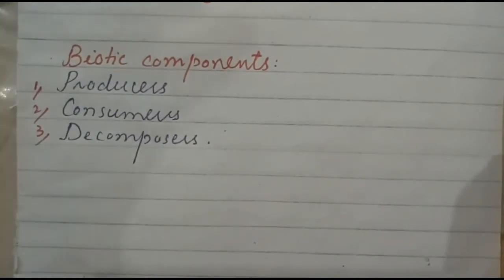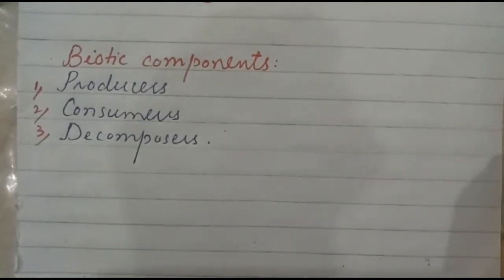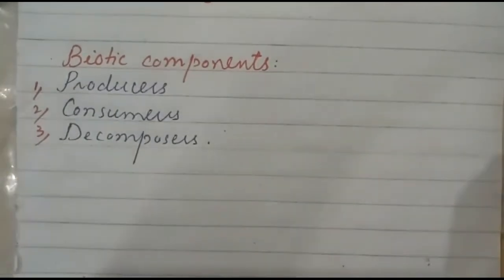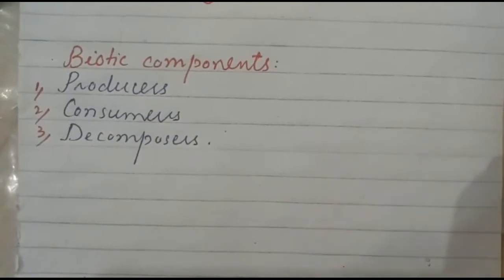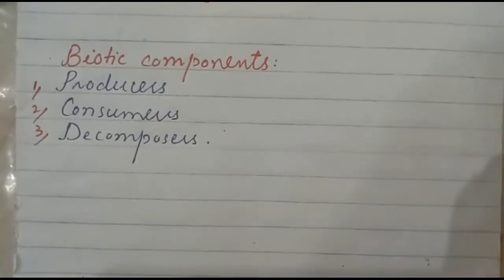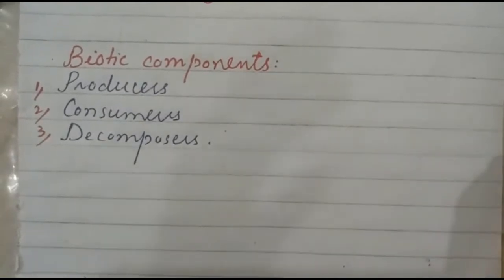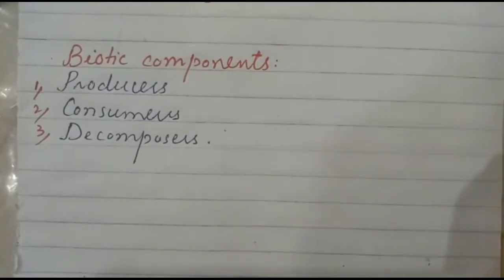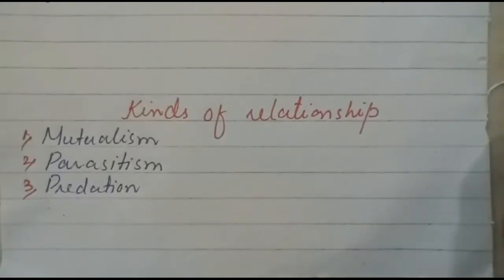During the decay and decomposition process, the material from a human body turns into humus in the soil. This humus forms mineral salts in the soil, which are very beneficial for further plant growth through photosynthesis. Good decomposition in the soil supports healthy plant growth, connecting biotic and abiotic components.